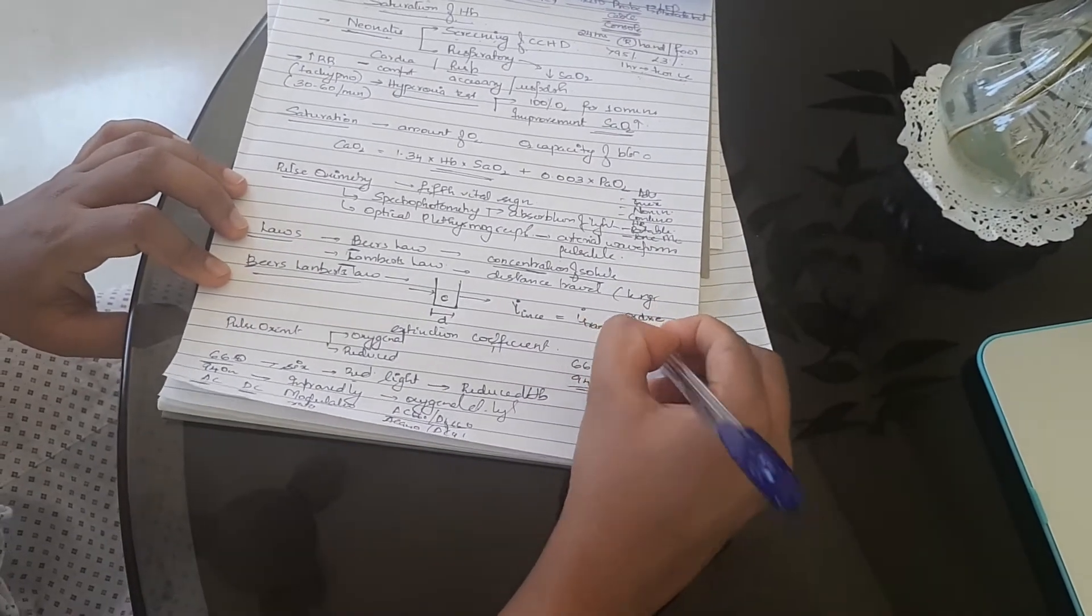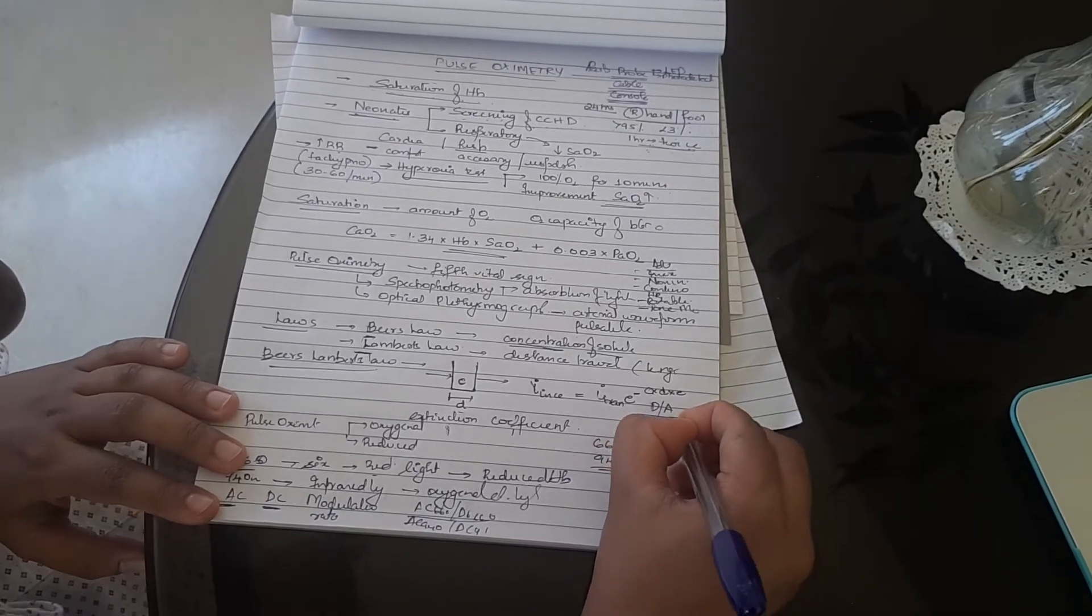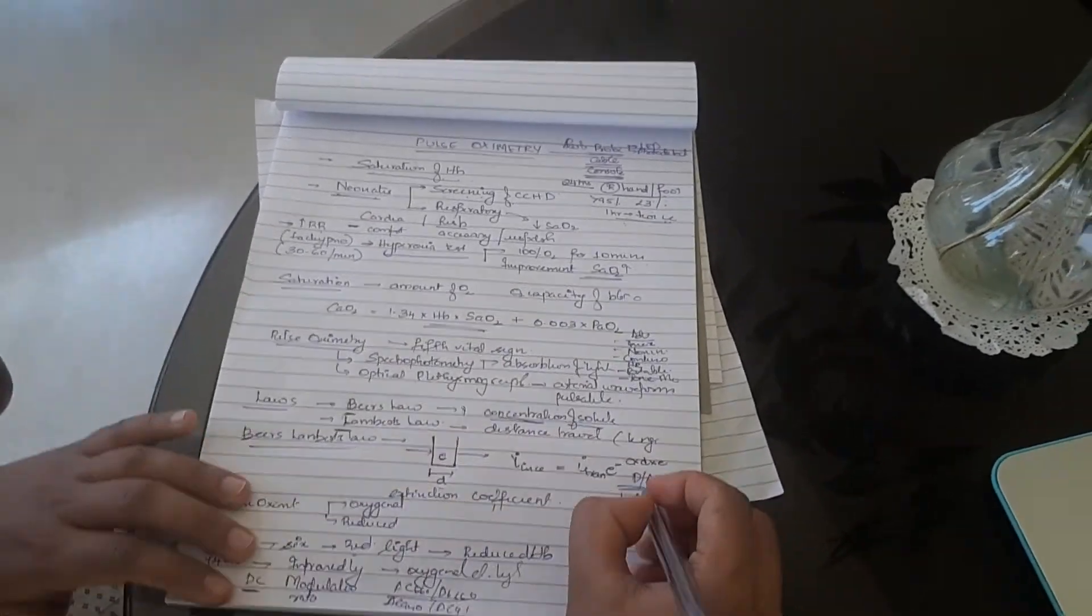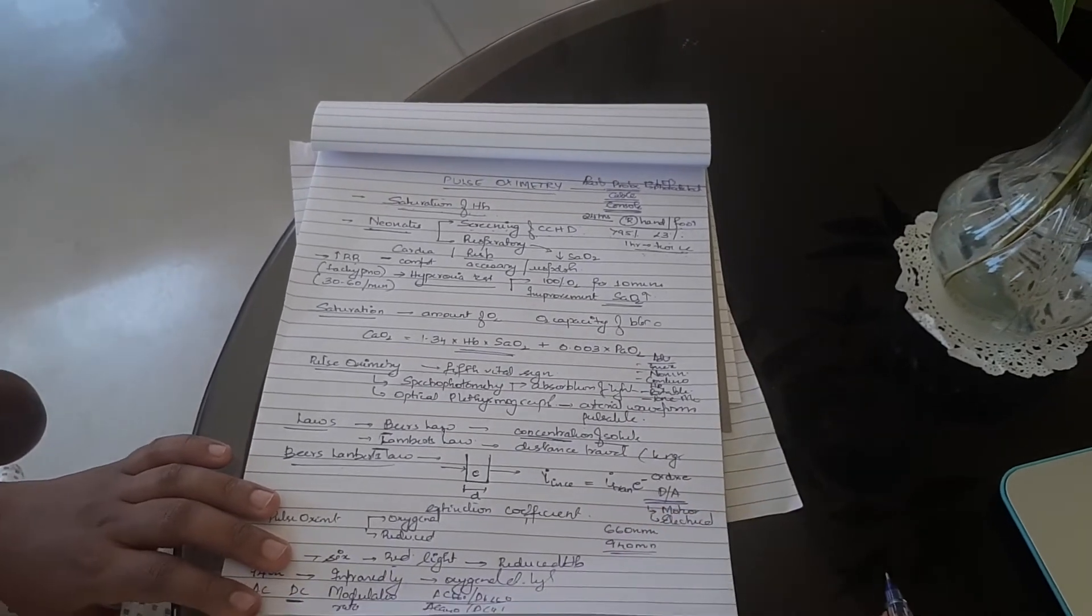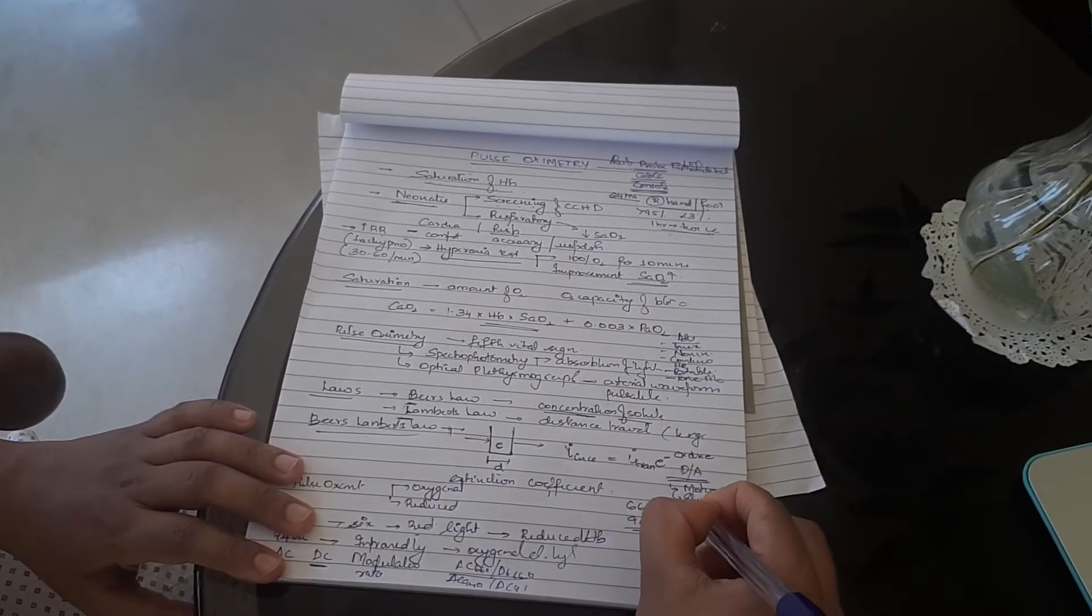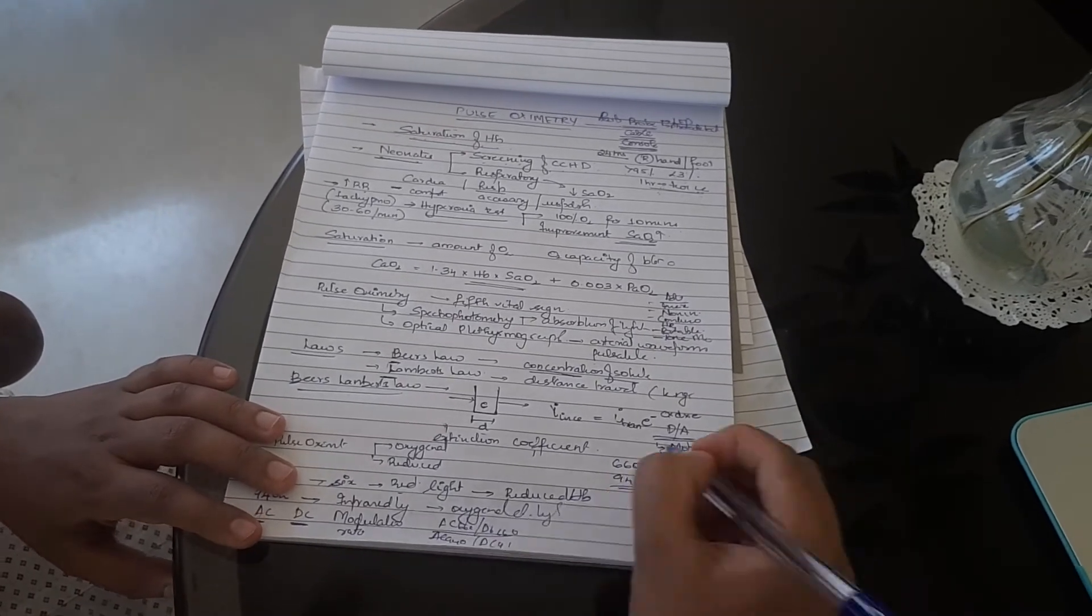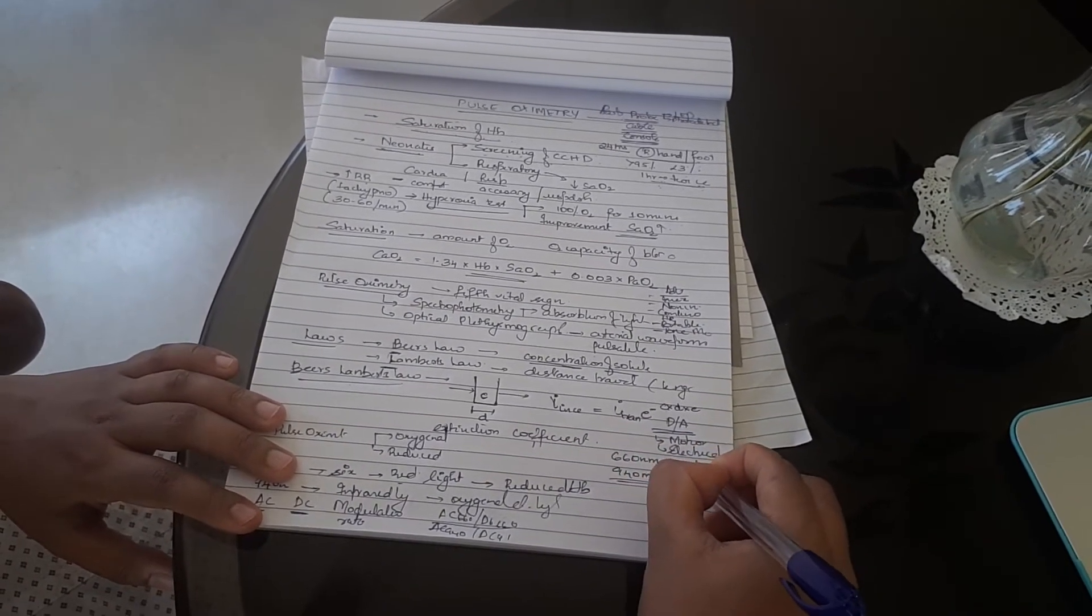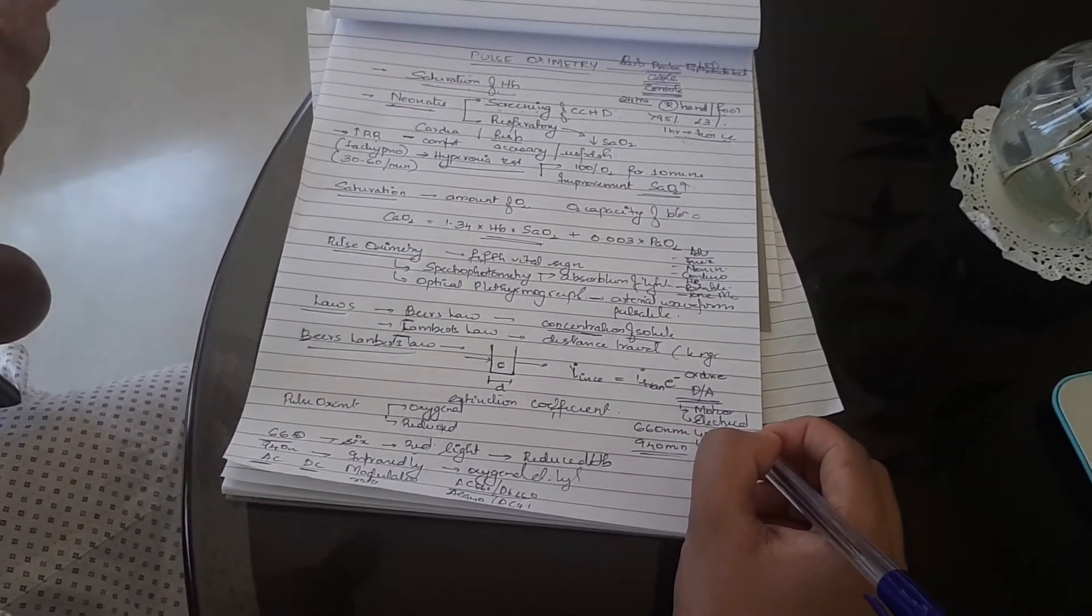Now what are the disadvantages? First thing: motion artifacts. If the patient or child moves, it's going to be difficult. Electrical interference or noise interference is a possibility. If the patient has pigmented skin, nail polish, dyes, etc., it's going to be a problem. If the patient has dyshemoglobinemia - that is methemoglobin, carboxyhemoglobin, etc. - it's going to be a problem.